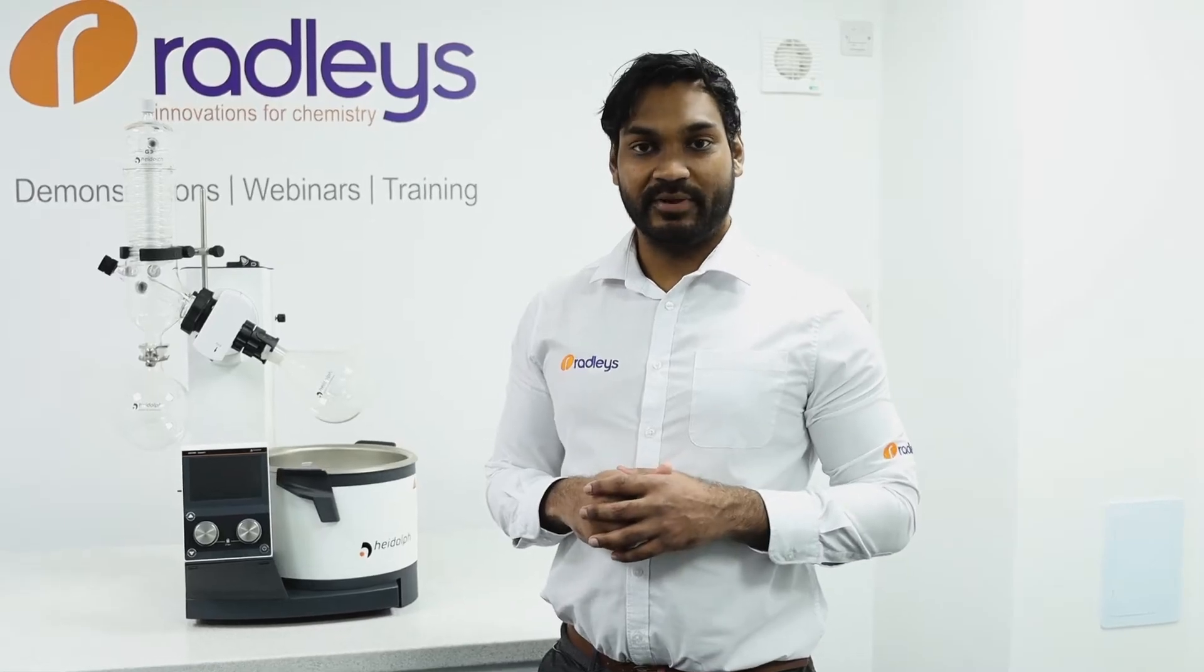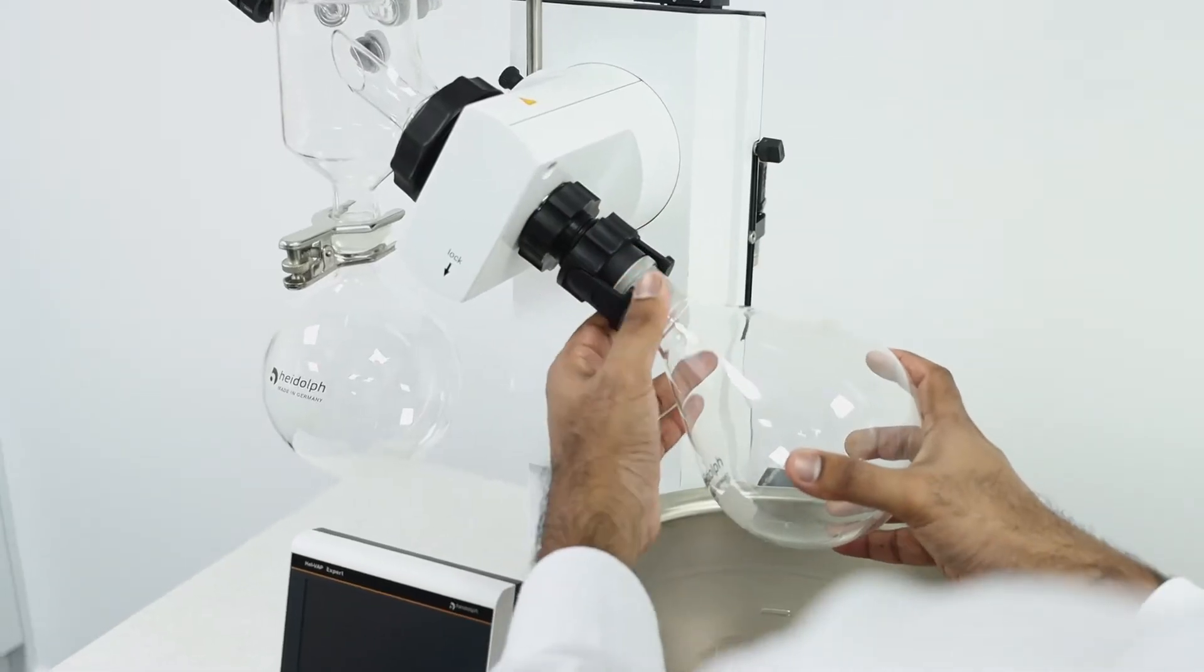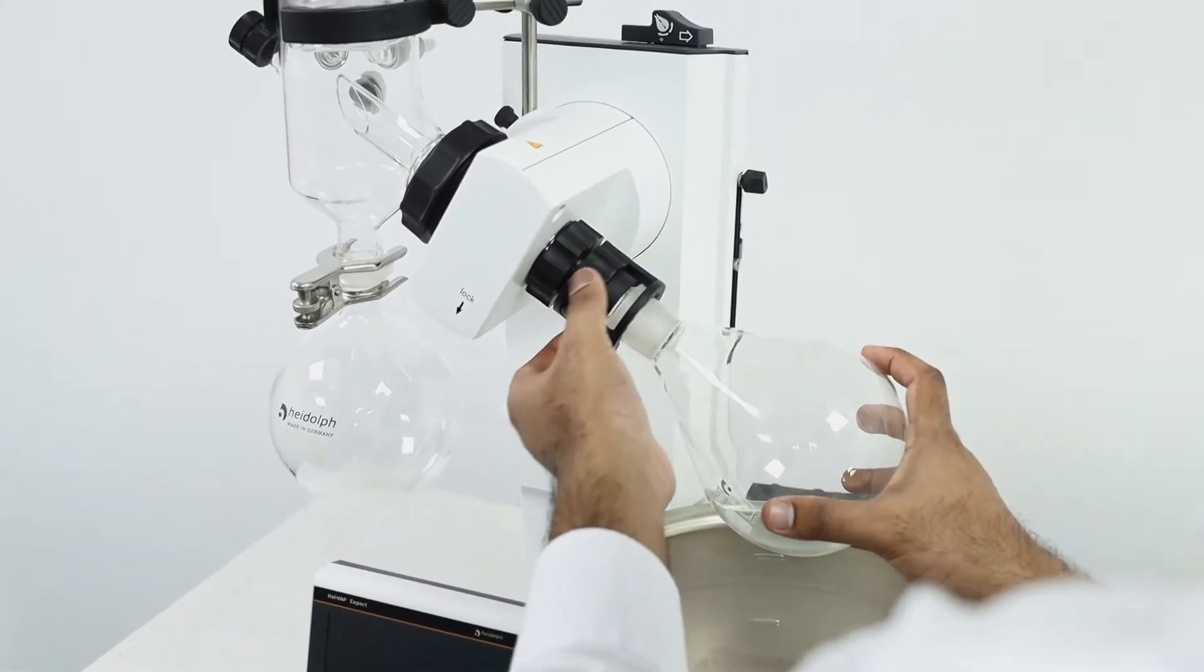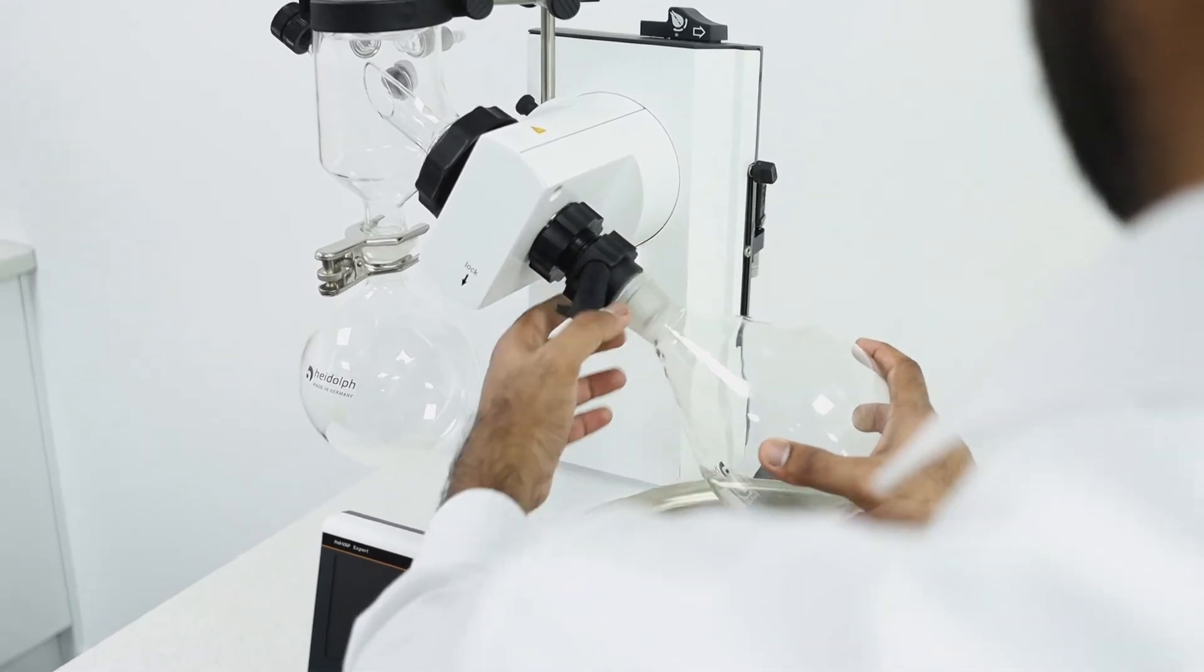First take off your evaporating flask by loosening the EZ-Clip. Now the EZ-Clip is super useful if your flask gets stuck on the vapor tube. The EZ-Clip will allow you to remove the flask and also hold it safely even when the system is not on the vacuum.